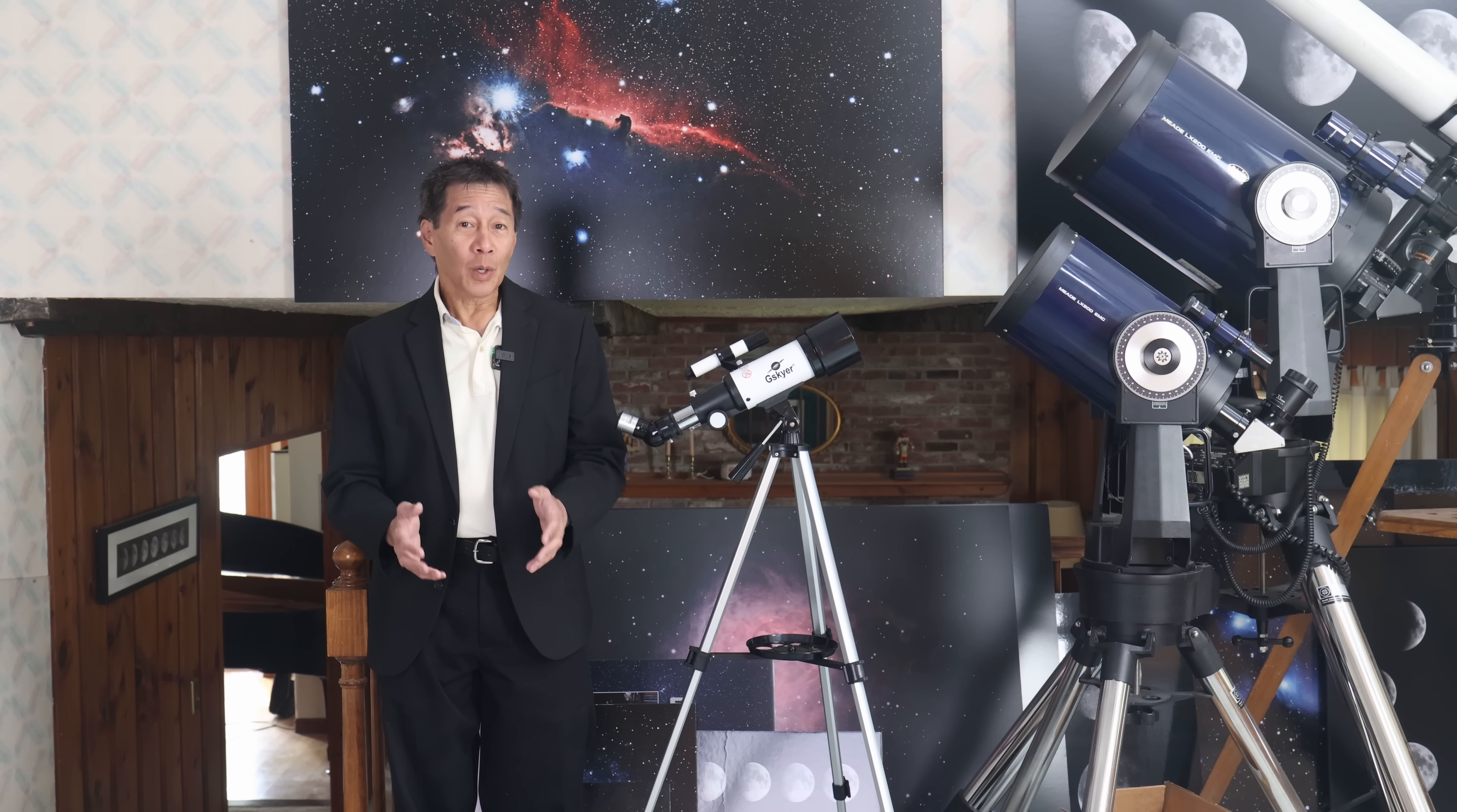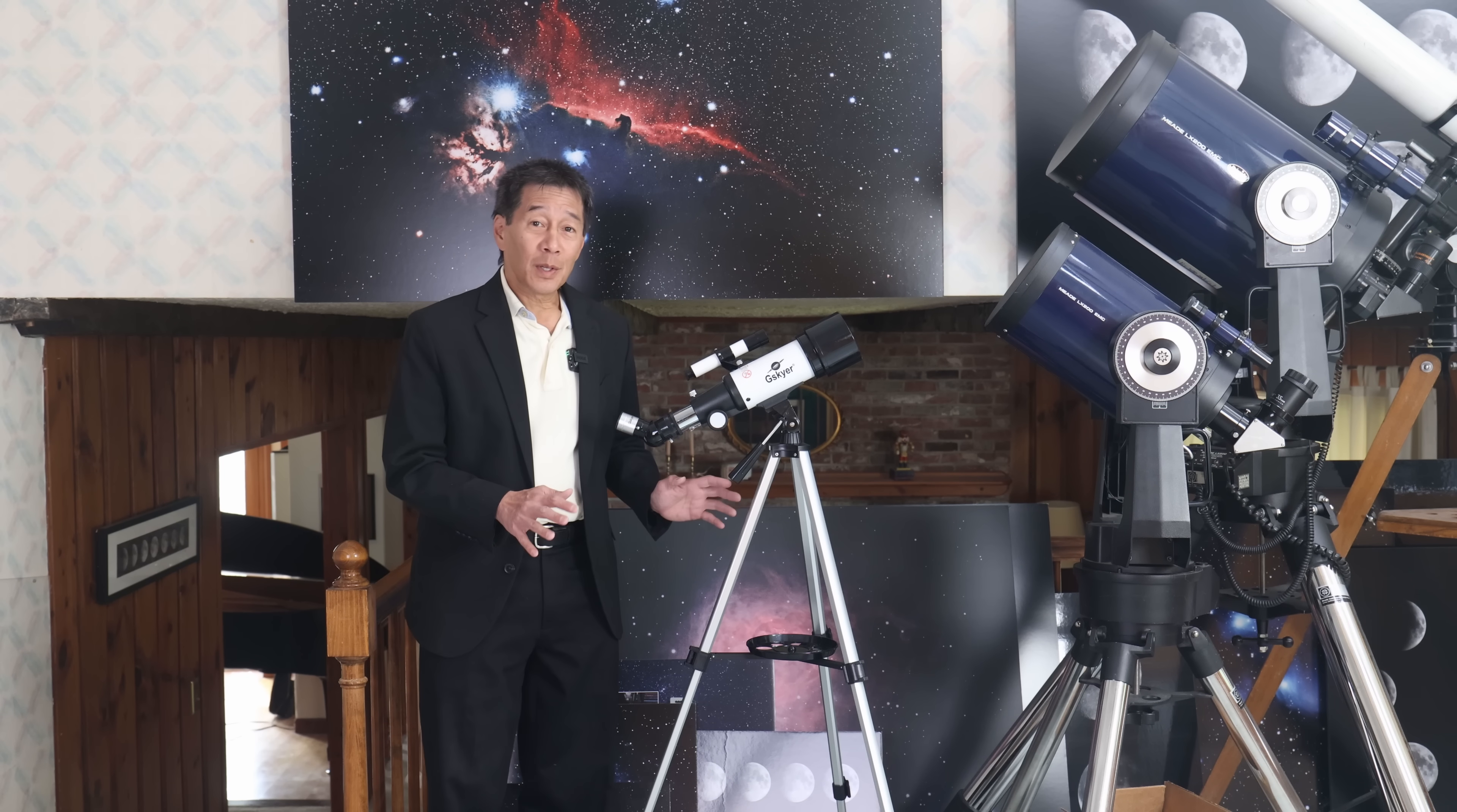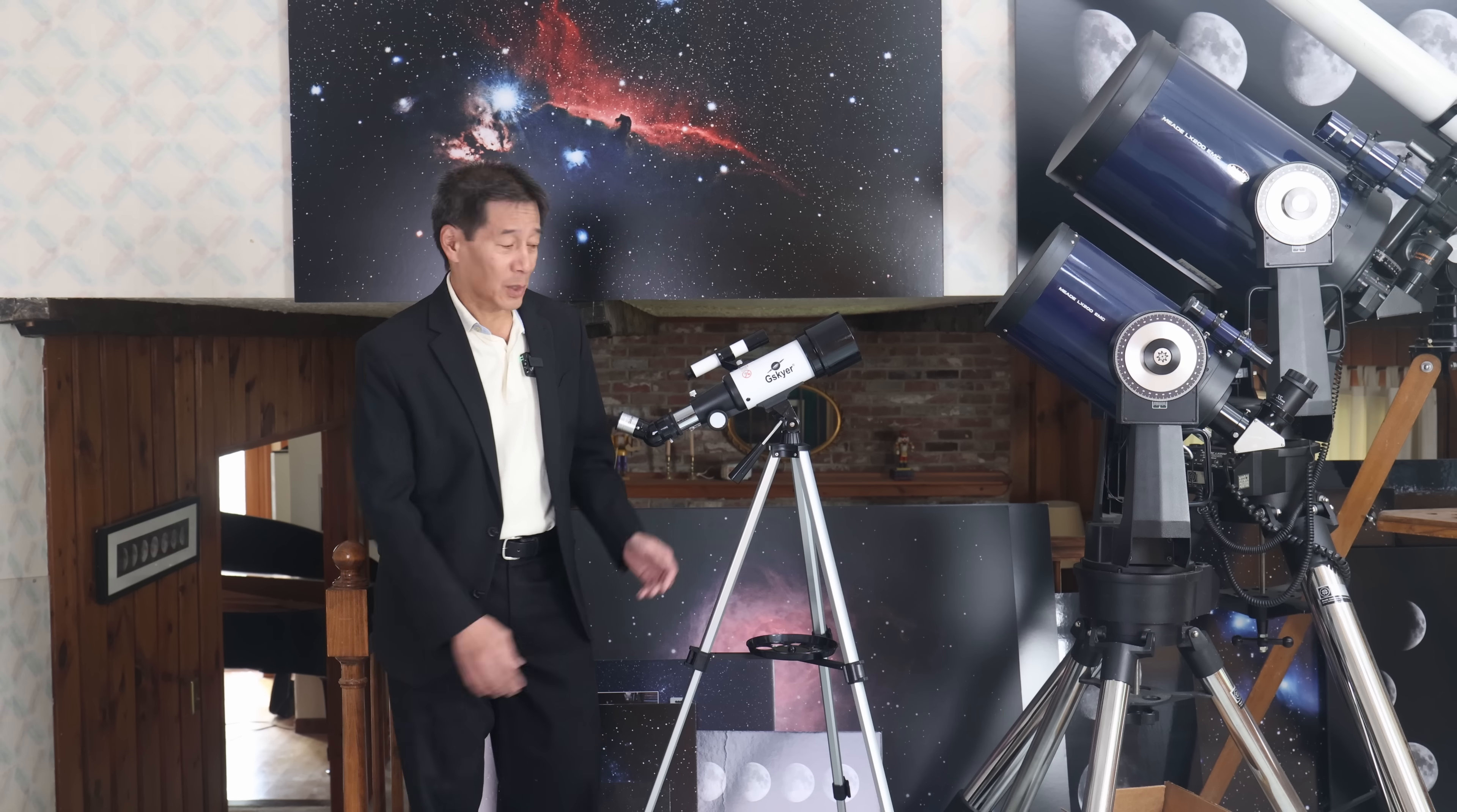So first of all, if you're looking at a very inexpensive telescope, don't even bother looking at the optical tube, look at the mount. The mount is the thing that's going to determine how happy or how unhappy you're going to be with the particular telescope.